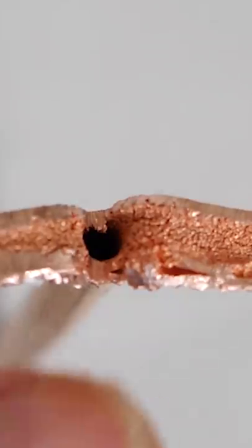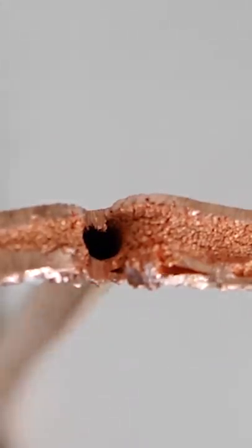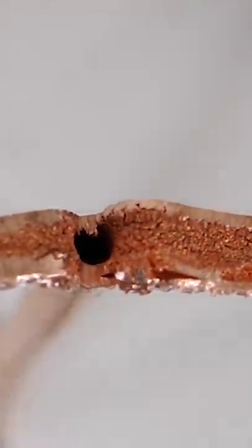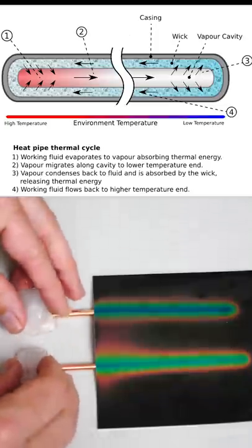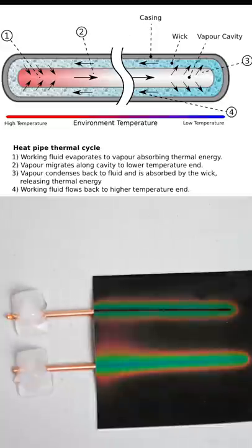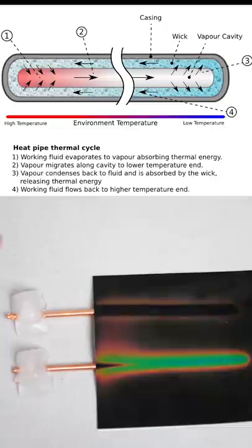The heat pipe is actually hollow inside with a small amount of water at a very low pressure. On the higher temperature end of the heat pipe, the water evaporates and quickly pushes the water to the other side where it condenses. And so through this evaporation condensing process, it quickly transfers heat across the entire pipe.